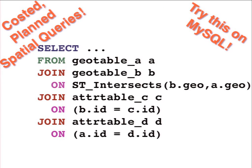The spatial type in PostGIS is fully integrated in the query planner — fairly unique, made possible because Postgres allows third-party types to get right into the core. So you can run really complex queries with multiple joins, including both non-spatial and spatial restrictions, and it will correctly plan it out, giving you an efficient query. Try it on MySQL — get back to me in a week when it's done.